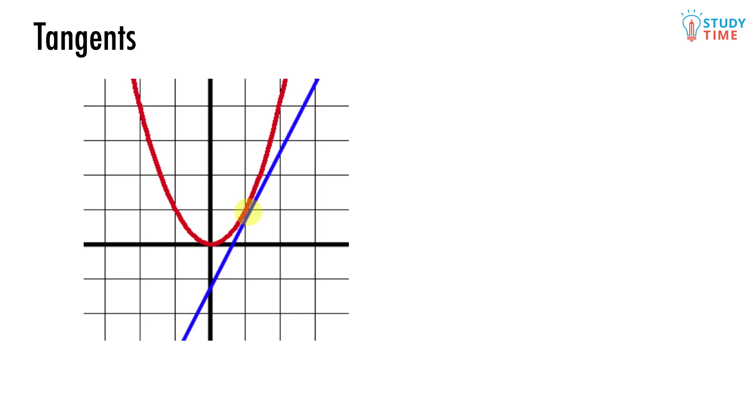Once again, here's the graph for y equals x squared. What you should be able to see is that there is one point only, which we've highlighted, where the blue line just barely touches the red curve. This is called the point of tangency.